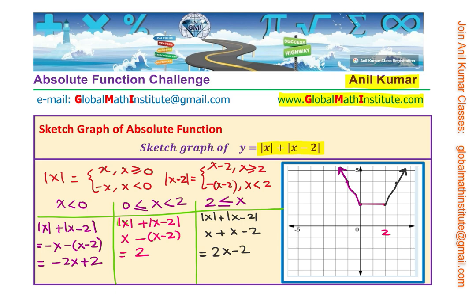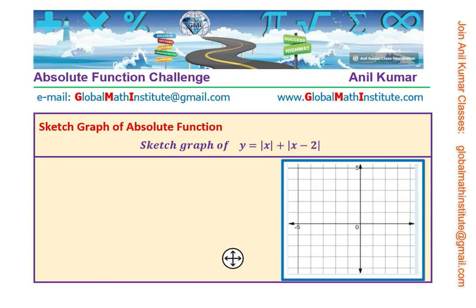So the strategy is clear: write the combination as a piecewise function in three different intervals to get their respective equations, then join them together to get the complete curve. You could also approach the same question graphically as a combination of the two individual graphs.